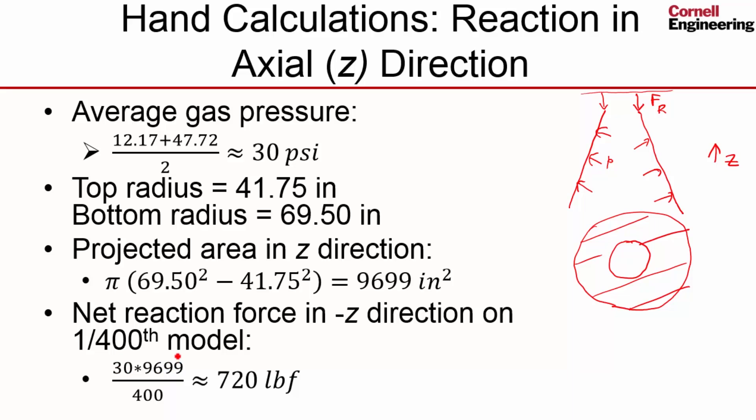Now in our case we have half a bolt—we've gone from 200 bolts to half a bolt—so we have 1/400th of the model. And so we expect our reaction in the axial direction, in the minus z direction, to be on the order of 720 pounds.